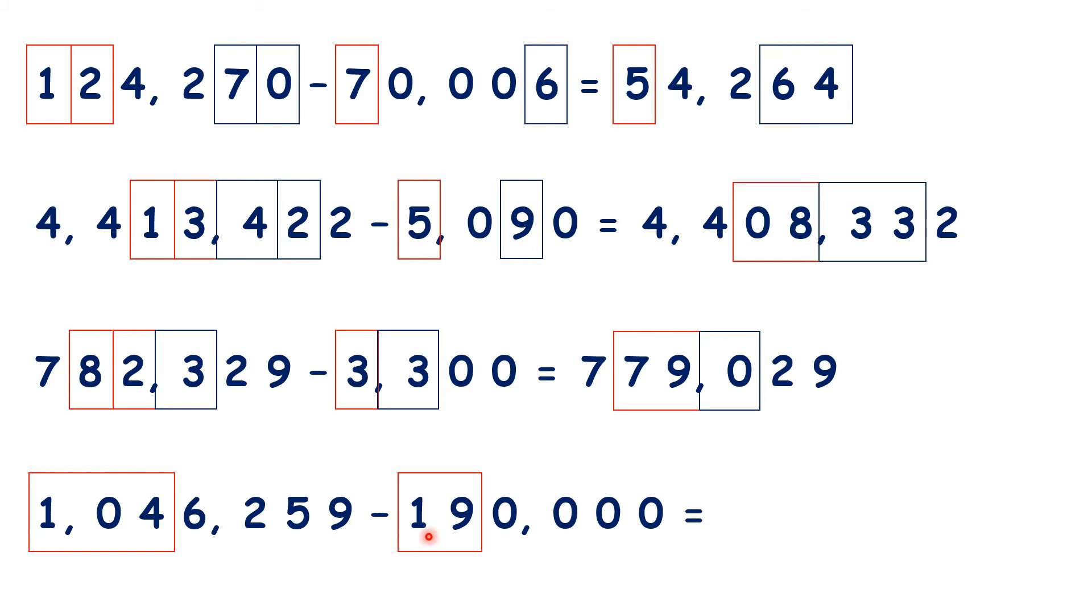How could you subtract 19 from 104 using mental methods? Well, you could either use adjusting, so subtract 20 to get 84, and then add 1 to get 85, or you could subtract 4 to get 100, then subtract another 15 to get 85.